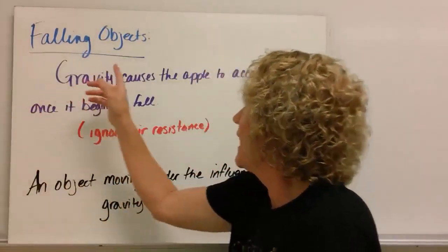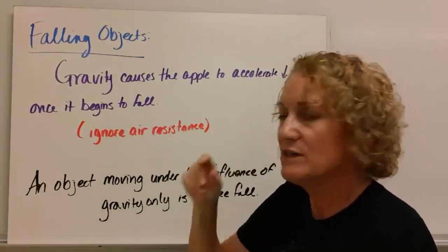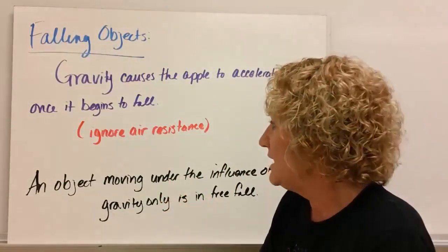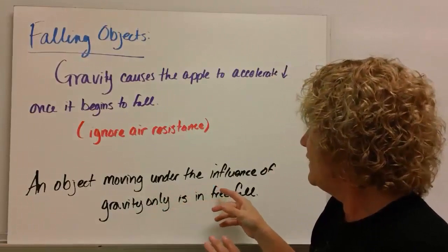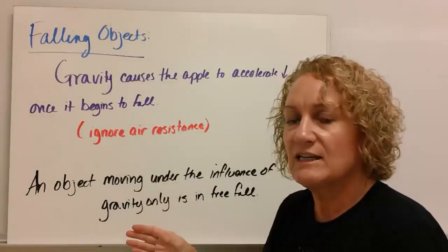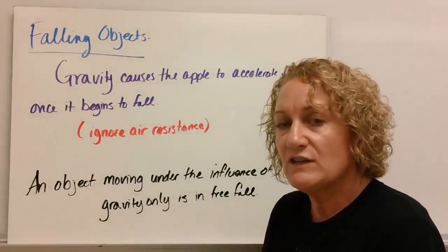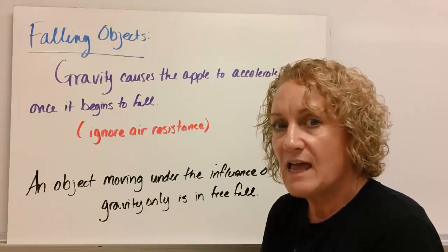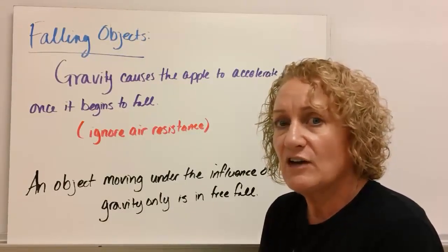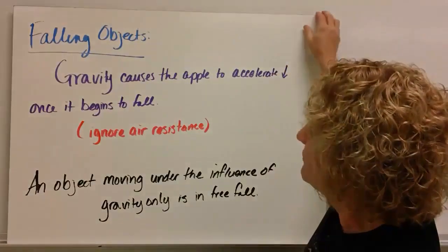So we're going to talk about falling objects. It's gravity that causes that apple to accelerate once it begins to fall. An object that's moving under the influence of gravity only, so the only force that's acting on it is gravity, is considered in free fall. That's going to be our definition of free fall. Our physics definition of free fall is an object that's under the influence of only one thing and that's gravity.